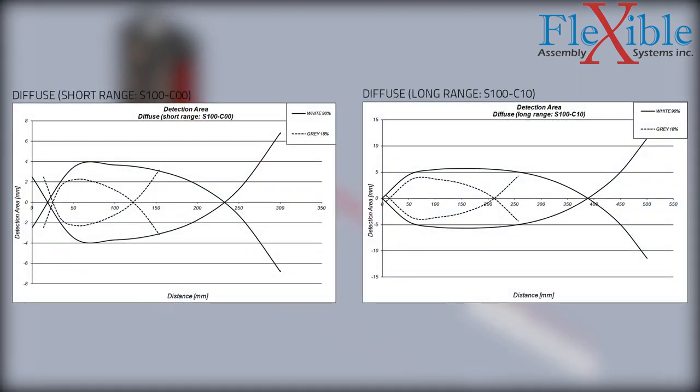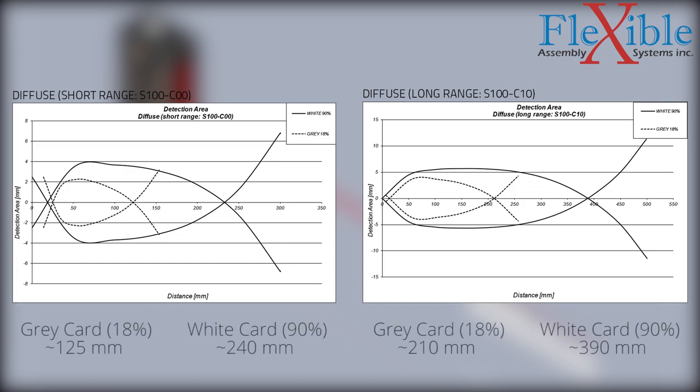On-screen are diagrams which show the detection range for the long and short-range models. As shown, a gray card with a reflective index of 18% must be twice as close as a white card with a reflective index of 90% to be detected.